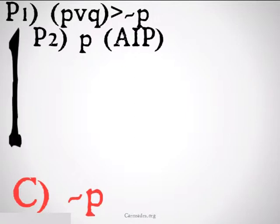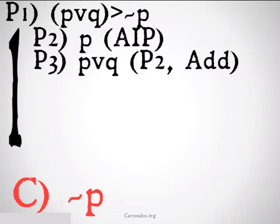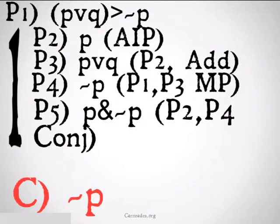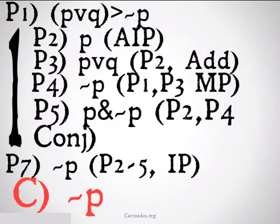We'll draw our line going down. From P, we can add on a Q by addition. From P or Q, we can get not P from 1 and 3 by modus ponens. We can then conjoin P and not P to get a contradiction by conjunction. That allows us to conclude the opposite of our assumption, so the opposite must be the case. We get not P from lines 2 through 5, indirect proof.